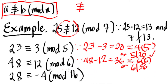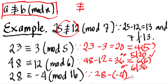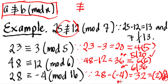Next, 28 is congruent to negative 4 mod 16. Why is that true? Because 28 minus (negative 4) equals 28 plus 4, which gives us 32, and 32 is 2 times 16. So 16 divides 32, or 16 is a factor of 32. We can see that in all these examples the two integers a and b are congruent with respect to their modulo.